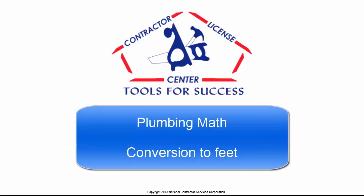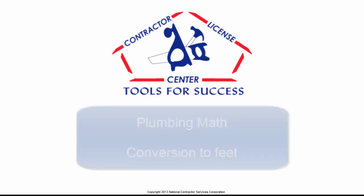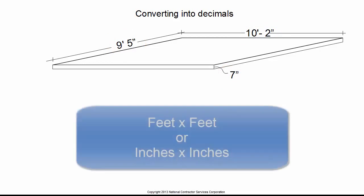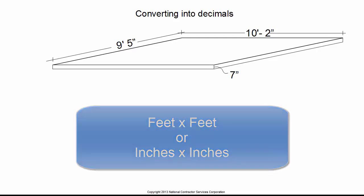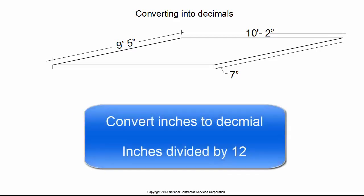This segment is a method of converting inches into a decimal of a foot. This area is 9 feet 5 inches long, 10 feet 2 inches wide, and 7 inches deep. To multiply feet and inches, you must either change the feet into inches or change the inches into a decimal of a foot. Changing inches into a decimal is accomplished by dividing the number of inches by 12.